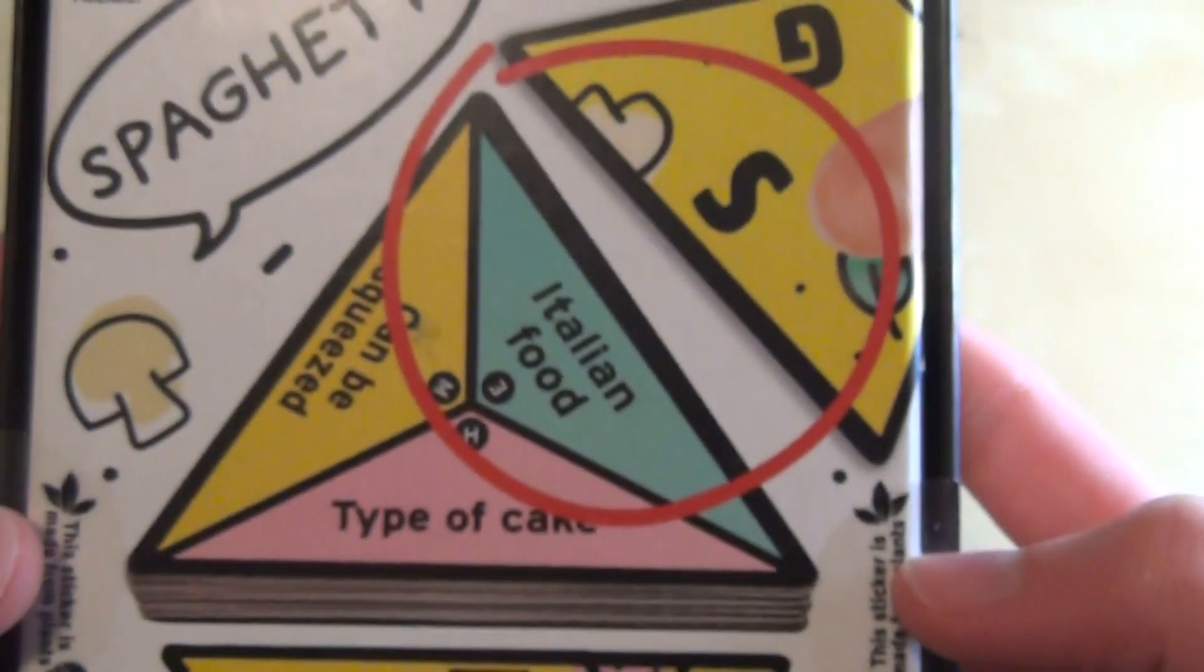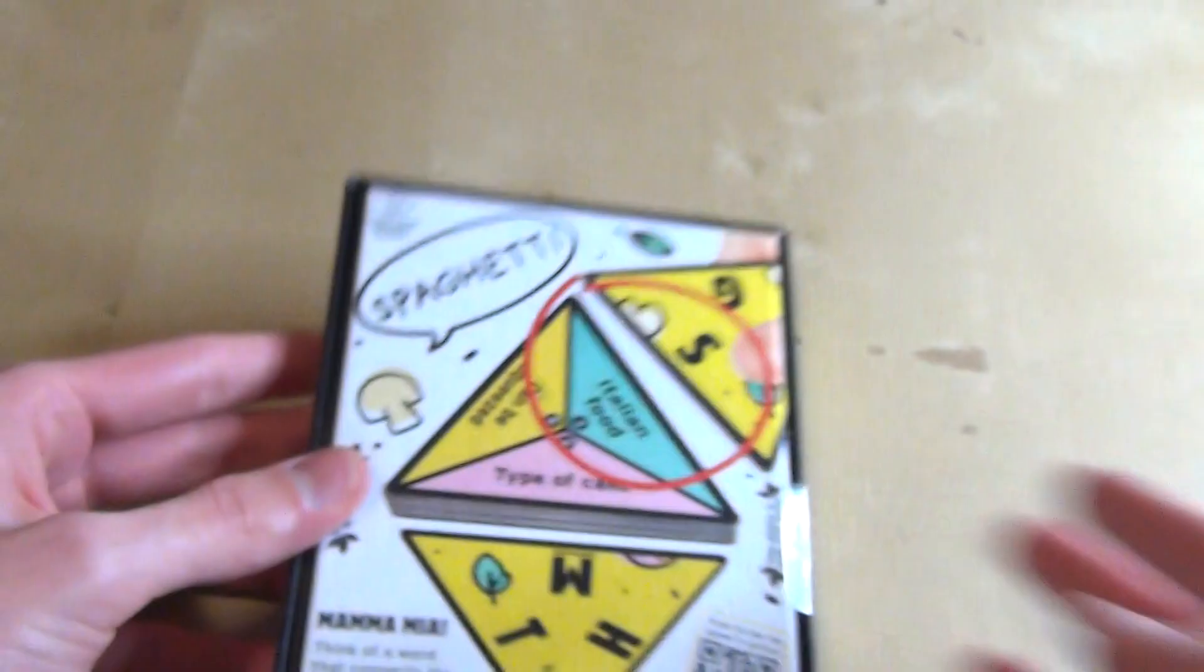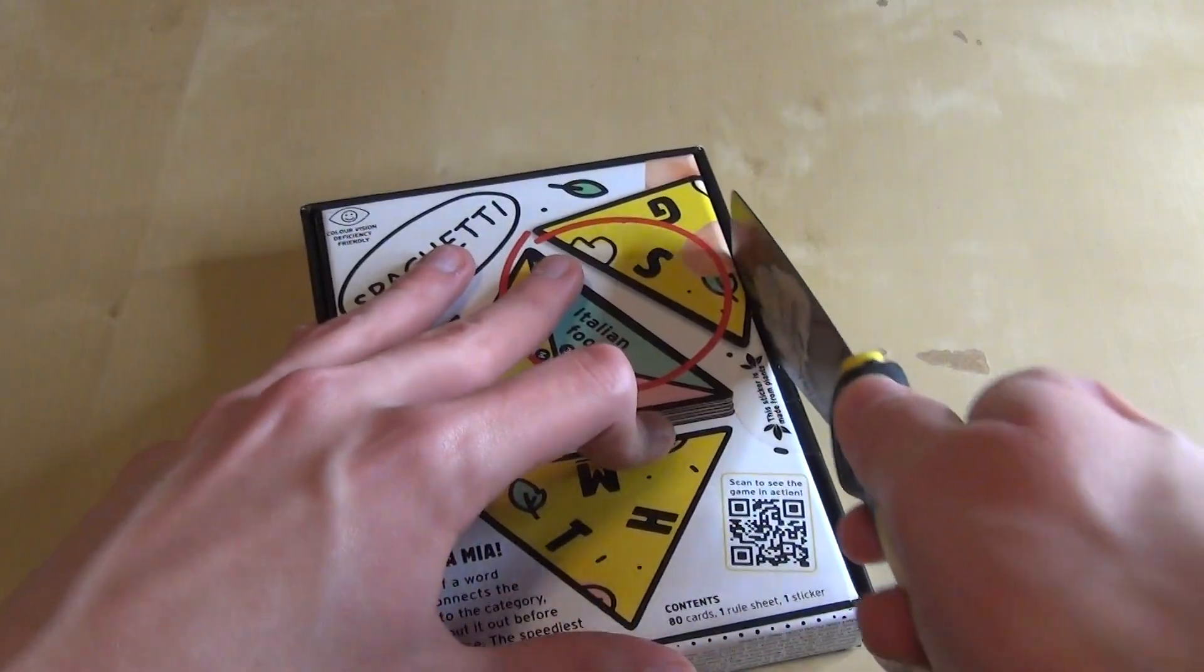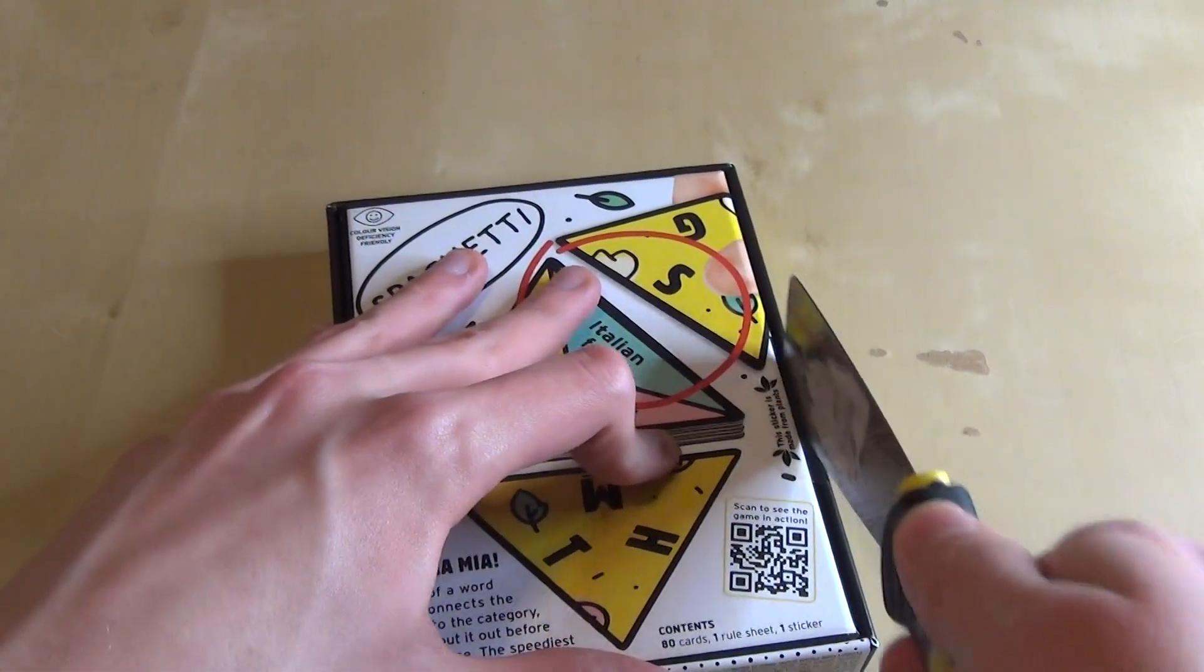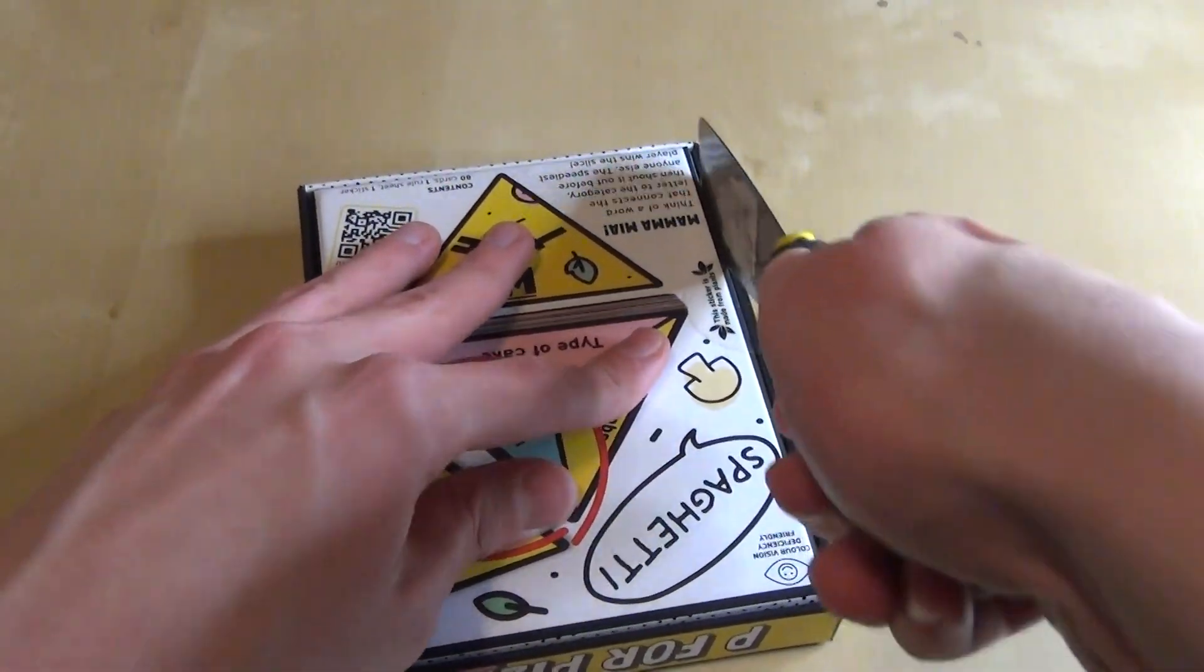This sticker is made from plants. It says it twice I guess. Okay, let's open this. Let's cut open the tape. Comment down below if you think Tilt and Shout is plastic free, since B corporation I'm pretty sure is the plastic free thing. It can be for others but okay.